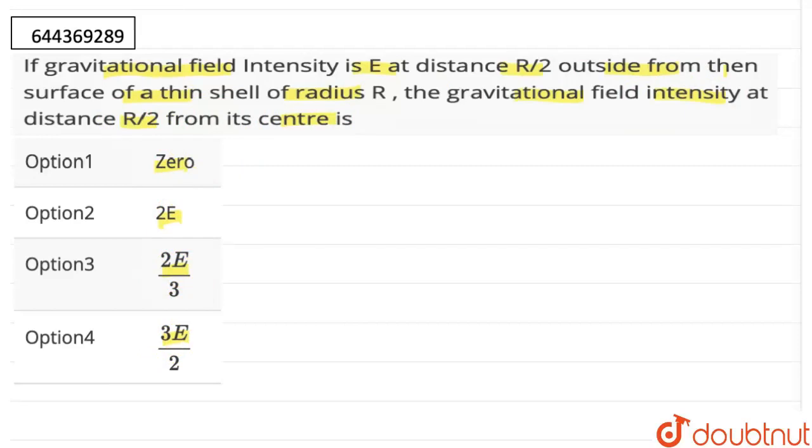So let us first of all draw a spherical shell. This is a spherical shell and the radius of this shell is given, the radius is R. So let us suppose this is our shell with the radius R. Now, it is given that at a distance R/2 outside the surface of the thin shell, so at a distance R/2 further from the surface of this shell, this distance is R/2.